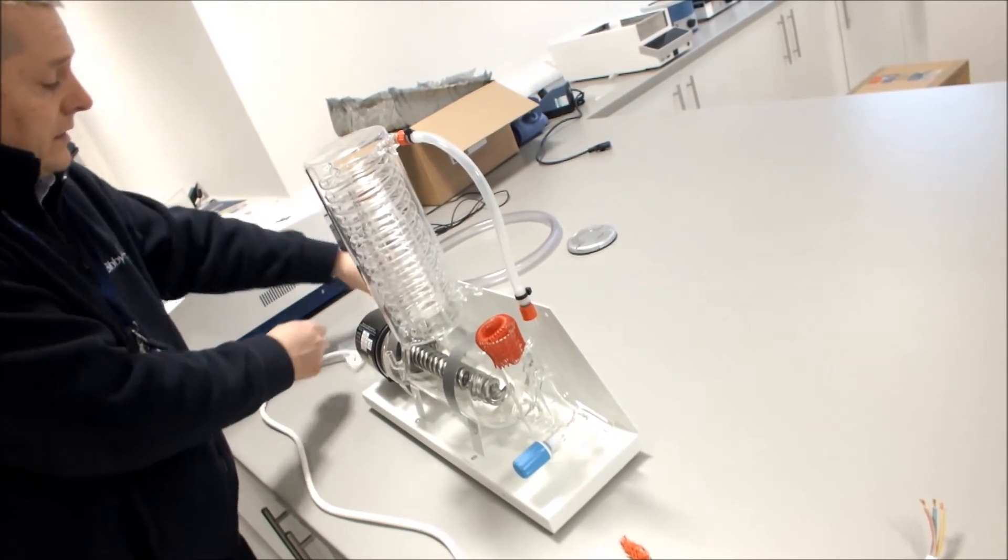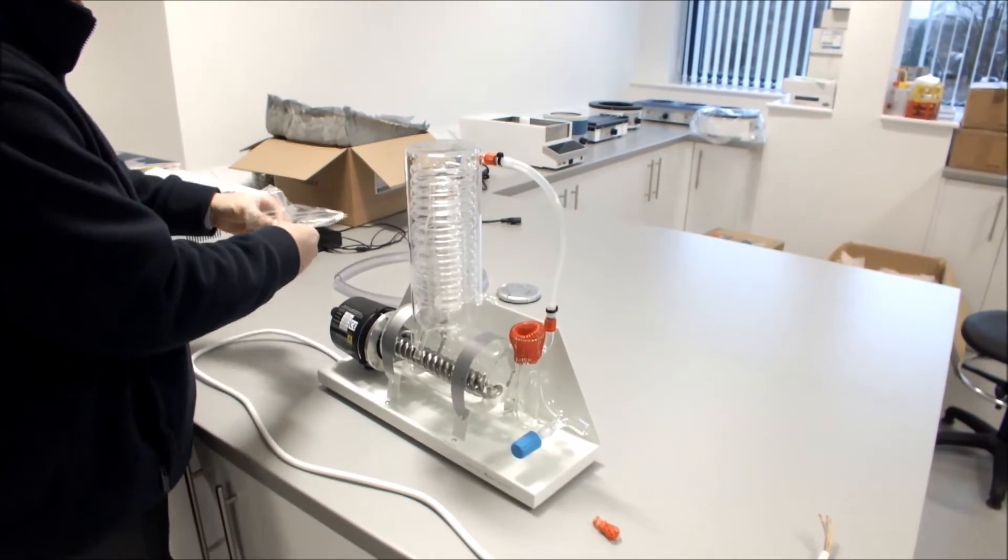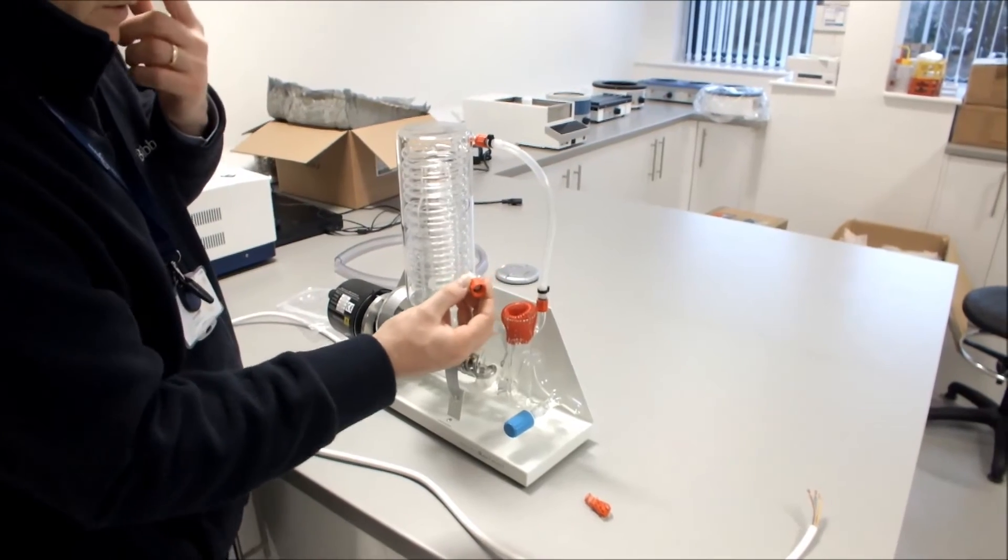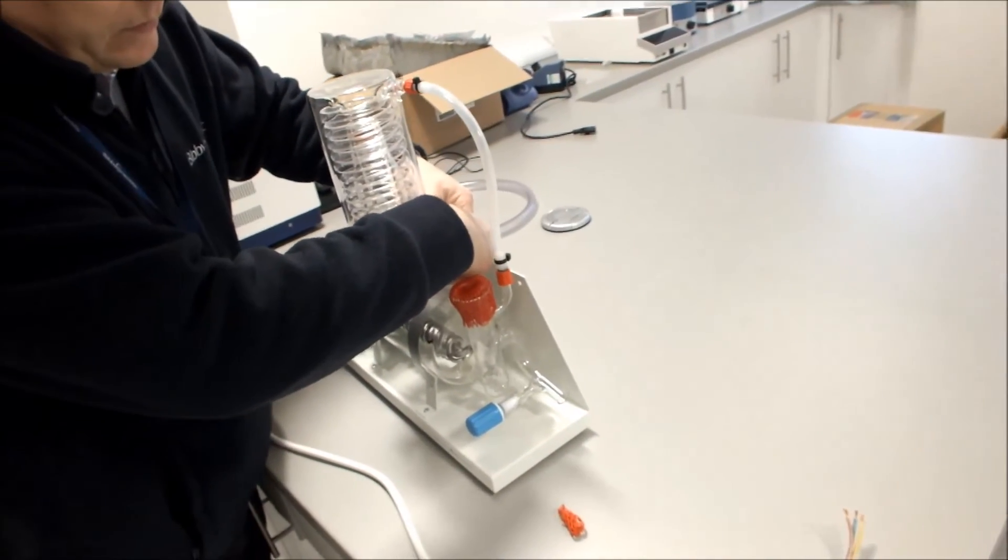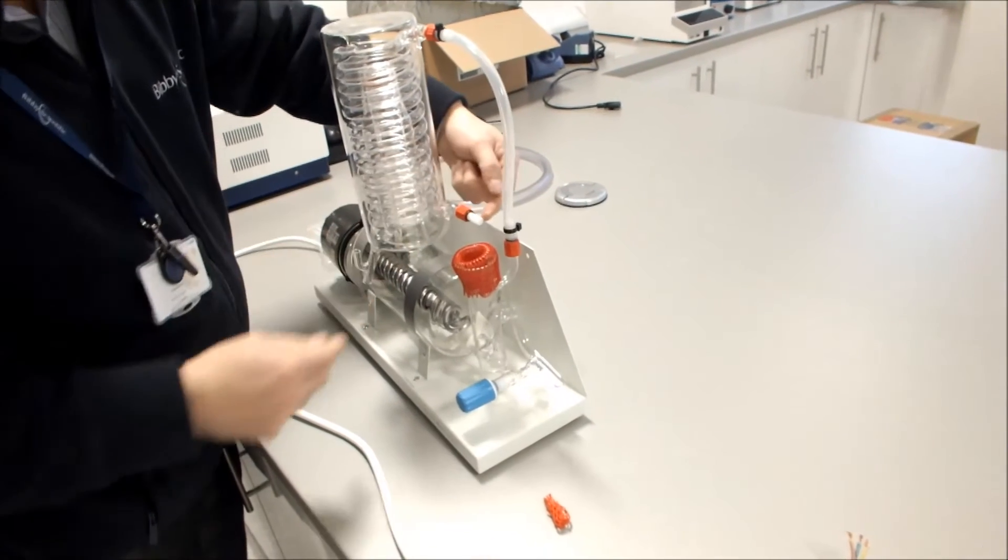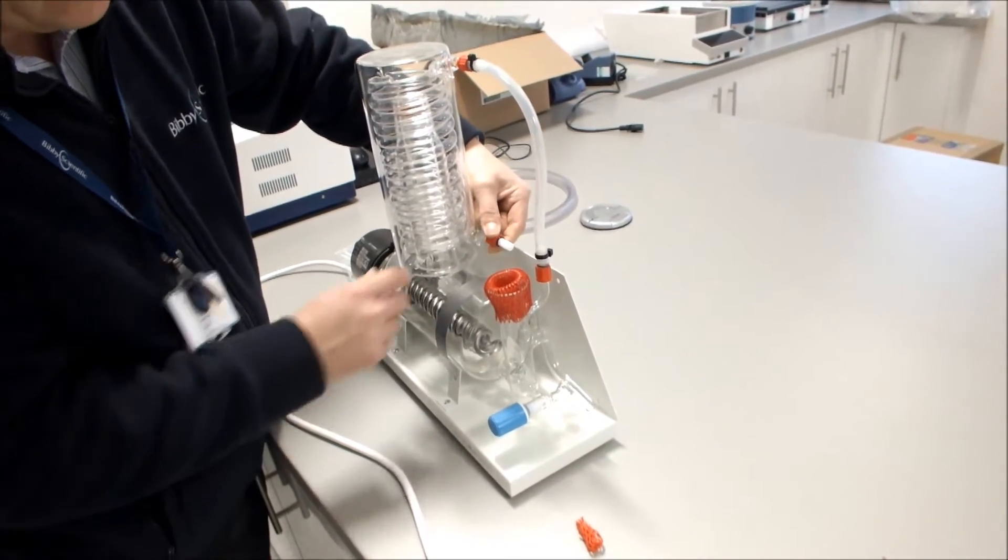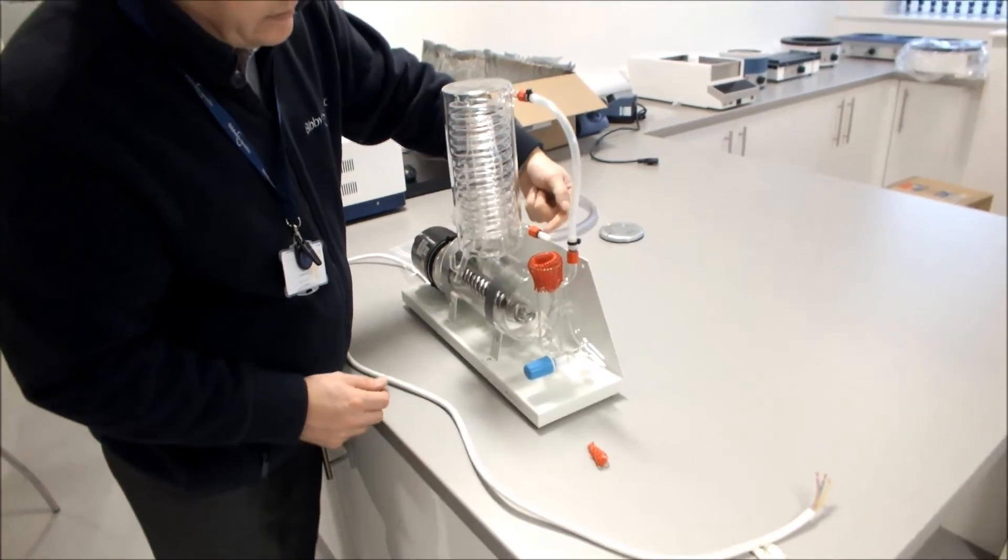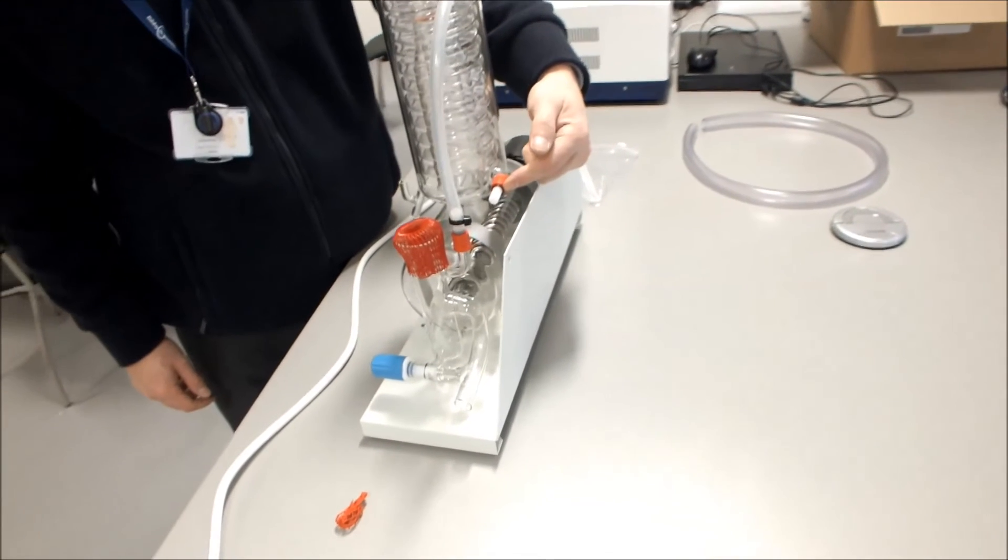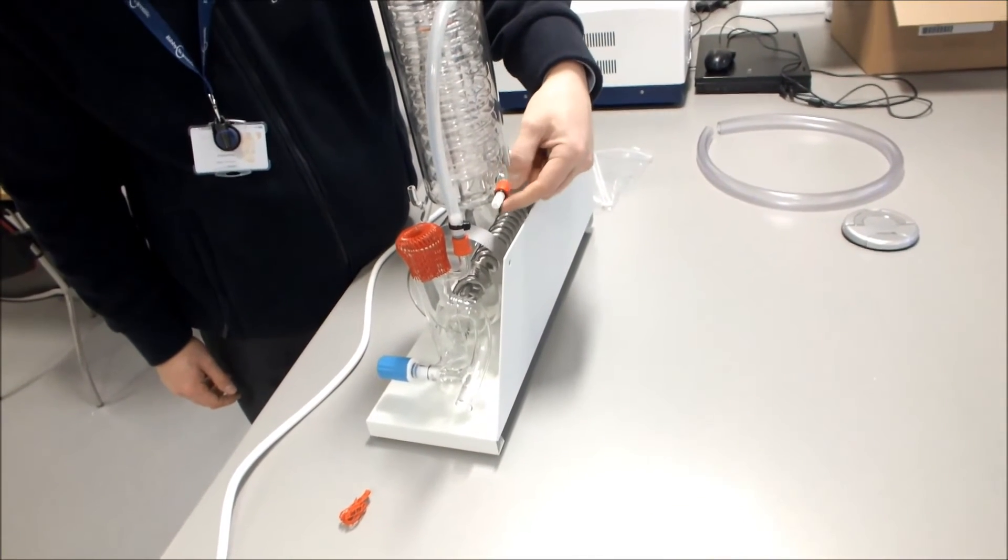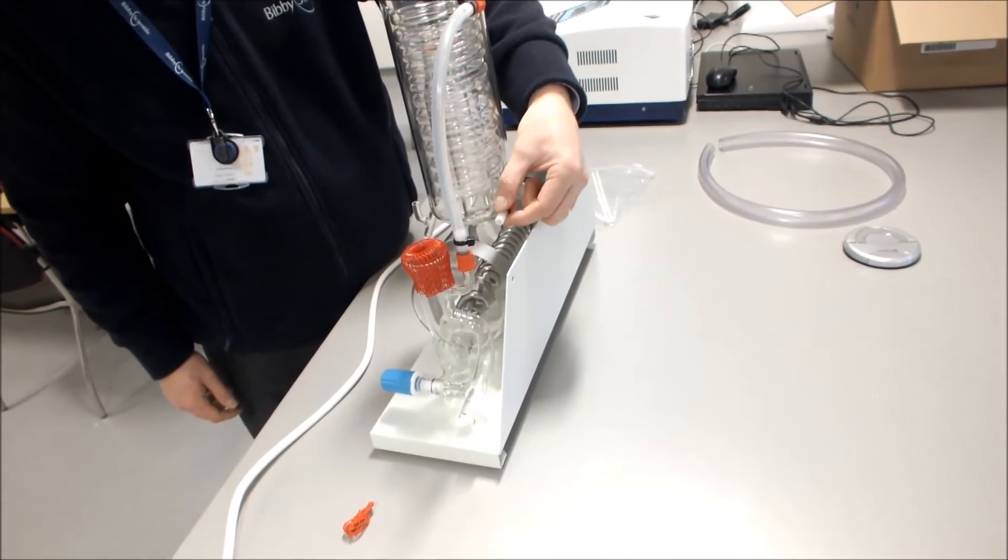We can then take the spare connector from our hose kit and connect that to a cold water inlet connector to the condenser, which is on the lower. This, then, is the connection you will make to your cold water supply. Use quality tubing and make sure you use hose clips, tie wraps, etc. when connecting it on.